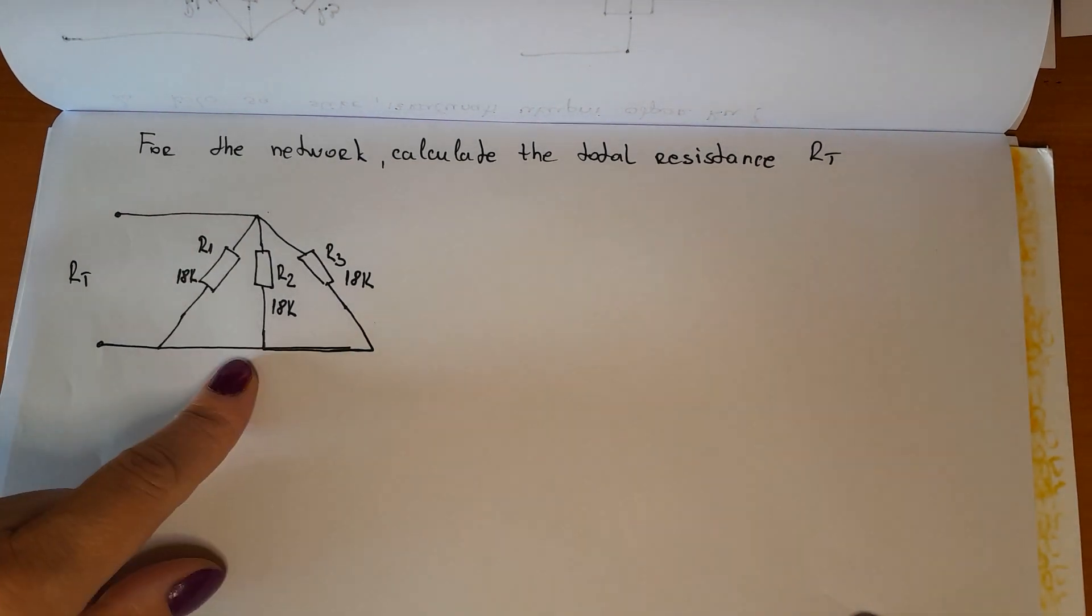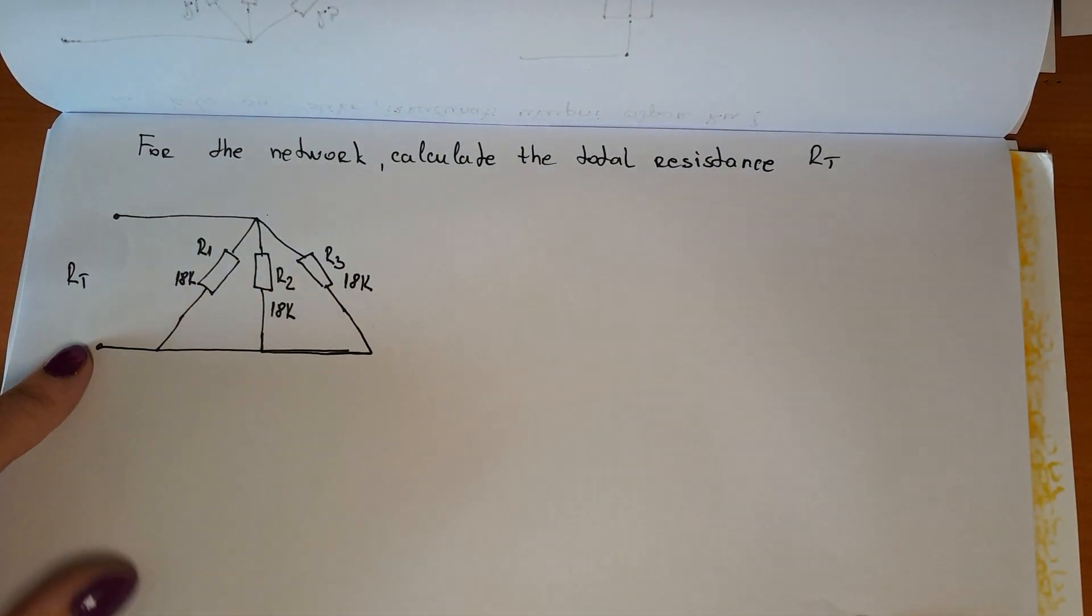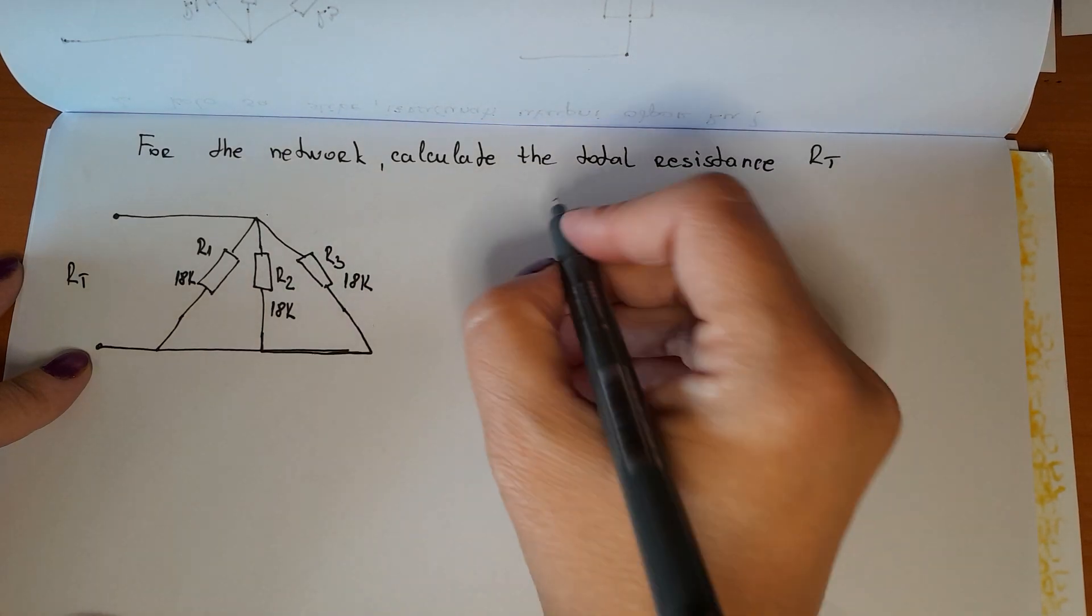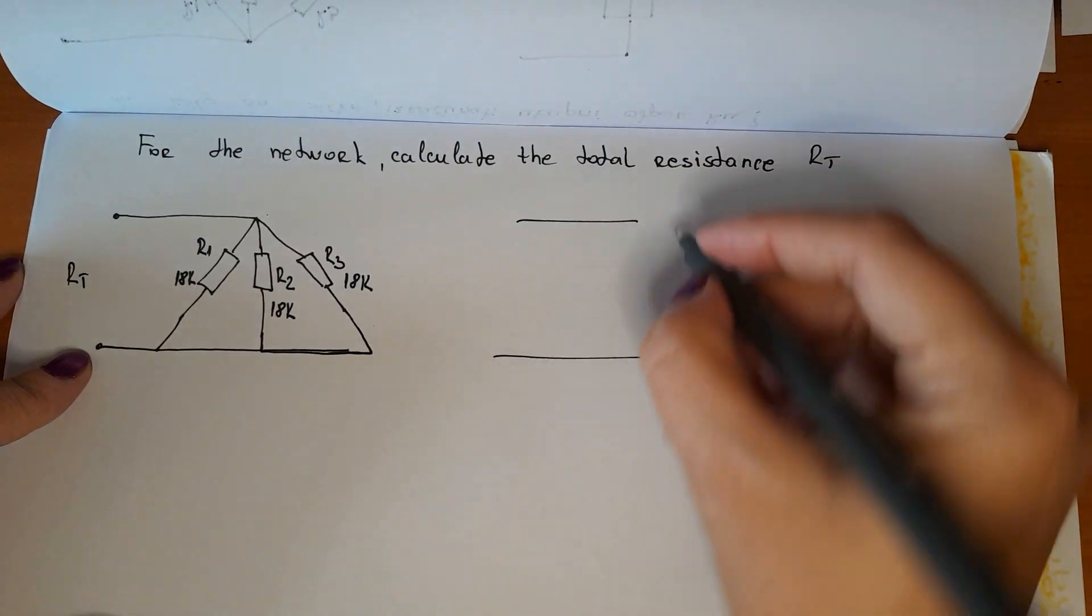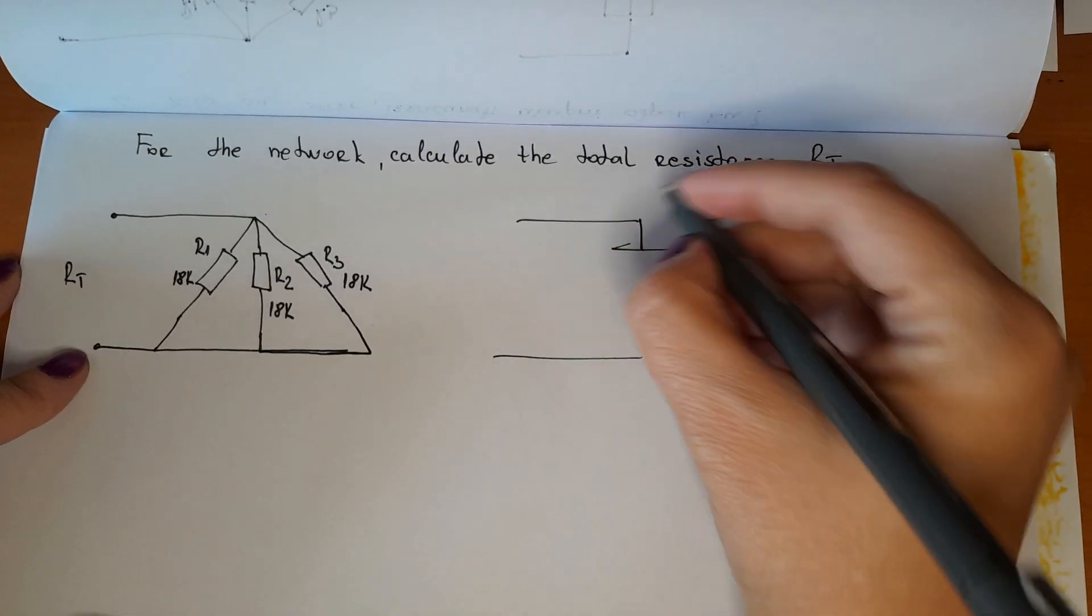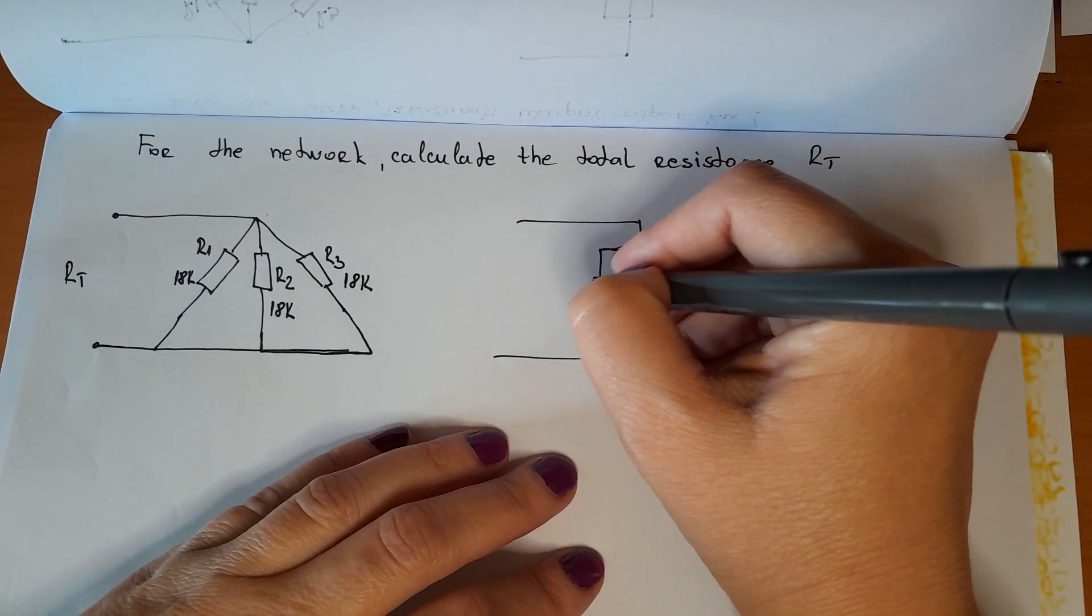Hi, today we have this network to calculate the total resistance Rt. This circuit can also be drawn like this, and that means that this is parallel.